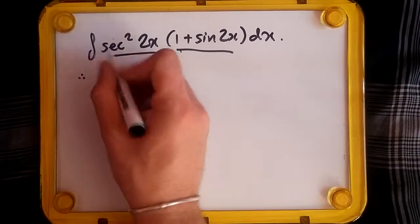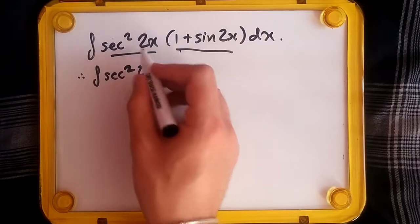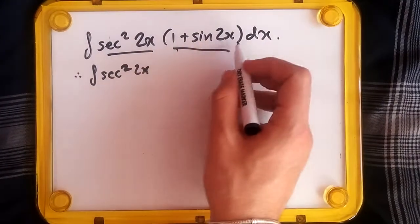While expanding this, we should get sec²(2x) times 1, plus sec²(2x) times sin(2x). So remember, sin(2x)...